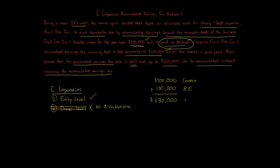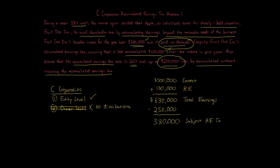The $630,000 represents the total earnings based on the tax share being audited by the IRS. We then subtract the $250,000 amount we're allowed, giving us $380,000 subject to the accumulated earnings tax — the AET — which carries a 20% rate as given in this problem. So $380,000 times 20% equals $76,000 accumulated earnings tax.